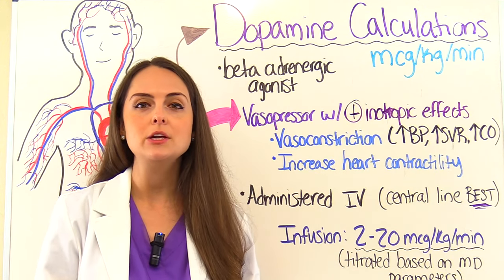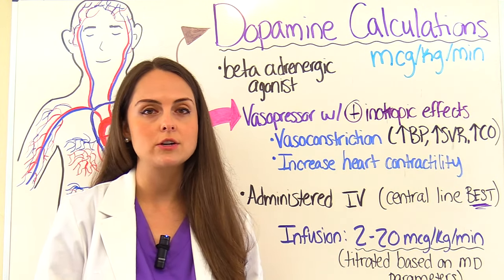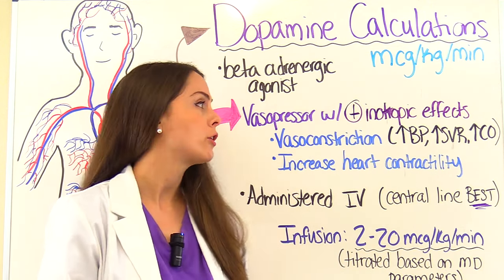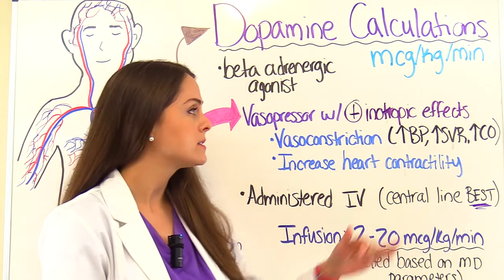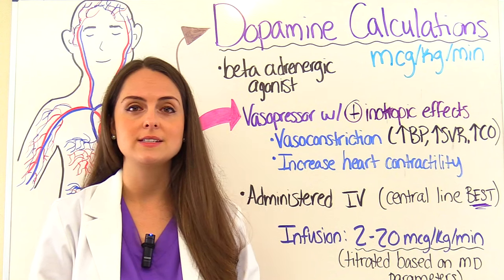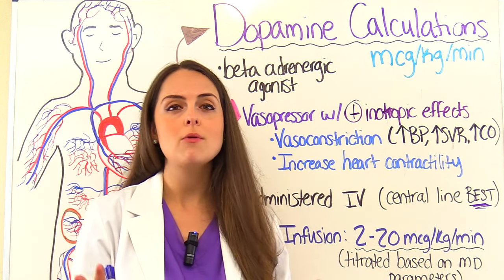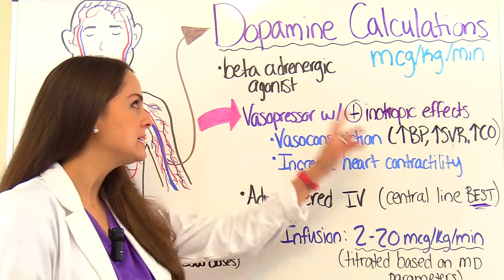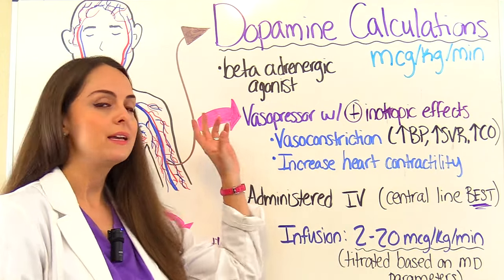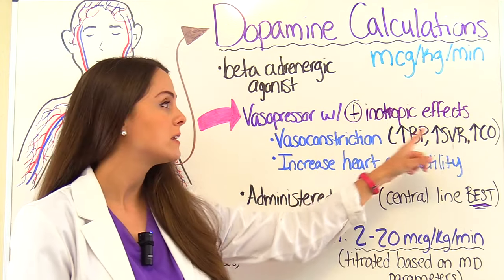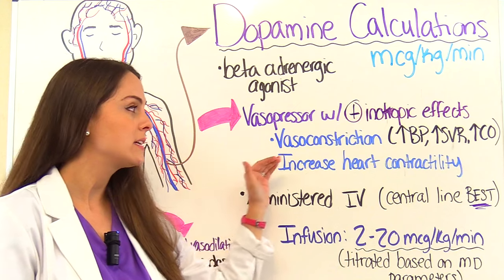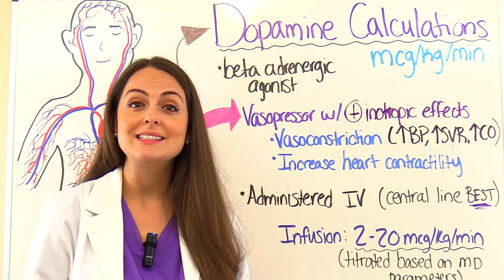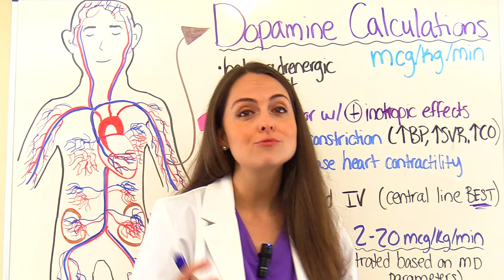Dopamine can be used in some patients in certain types of shock where they're experiencing severe hypotension, low cardiac output, or low systemic vascular resistance — and dopamine can help increase those values. In addition, because of dopamine's positive inotropic effects, it increases the heart's contractility, which means it helps the heart pump stronger.